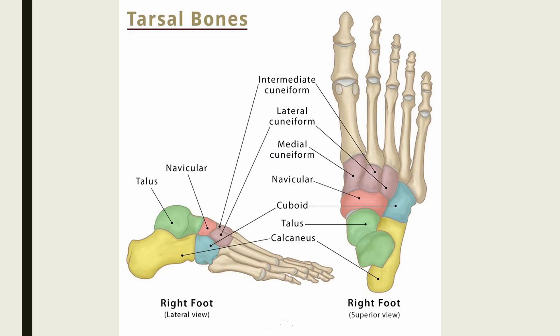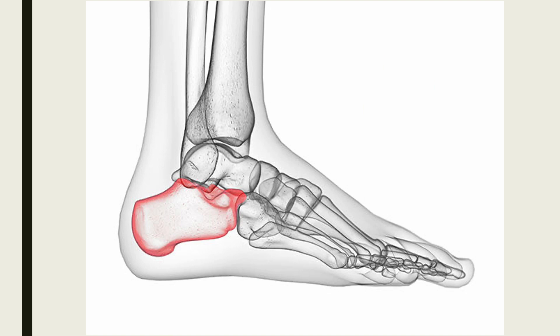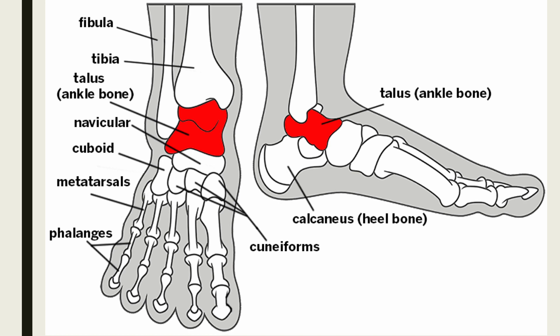The tarsal bones consist of seven short bones located at the proximal region of the foot, arranged in proximal and distal rows. The calcaneus bone is the largest tarsal bone, projecting posteriorly as the heel; the calcaneal tuberosity on the plantar surface can be felt under the skin. The talus bone rests on the upper surface of the calcaneus and is the link between the foot and the leg through the ankle joint.